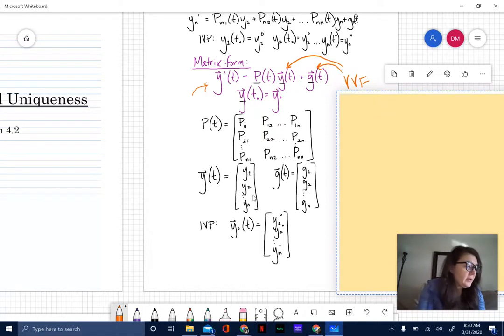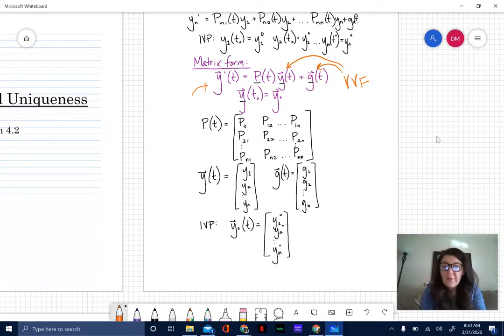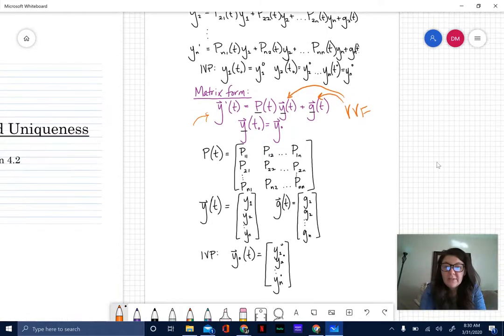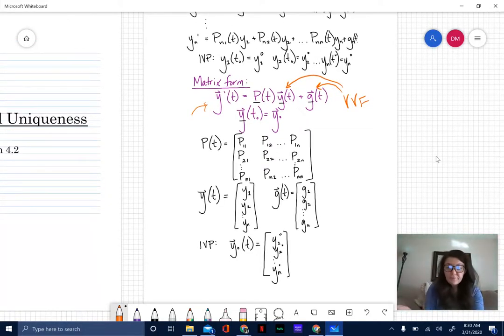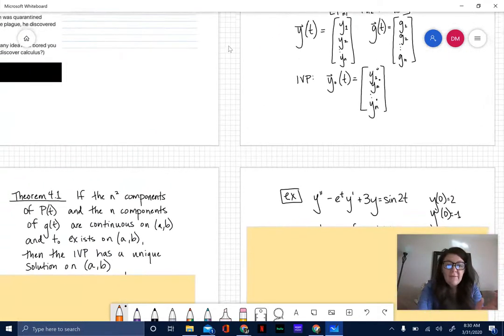Then we have y(t), g(t), and then we get those initial values in there as well. Y(t) looks like all of my solutions - y1, y2, all the way to y sub n are all solutions of this differential equation. G(t) would be all the constants that we've added on to the end. This is essentially taking our system of differential equations putting it into that matrix form.